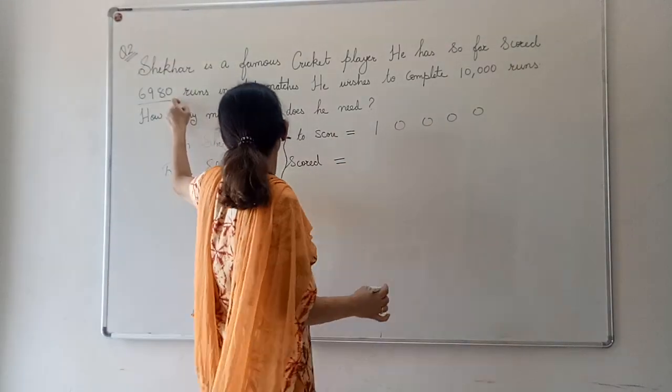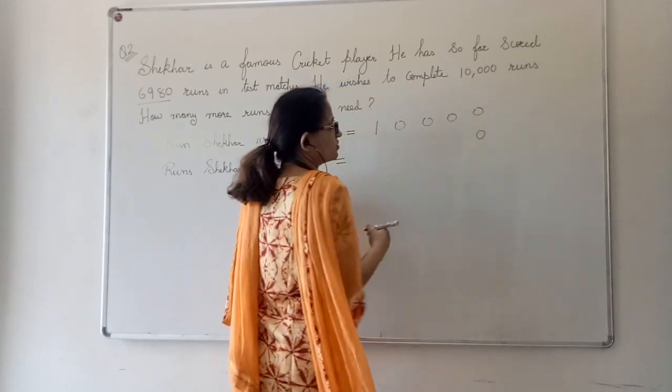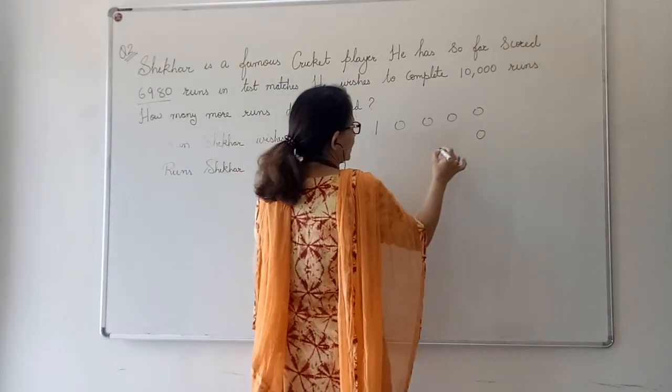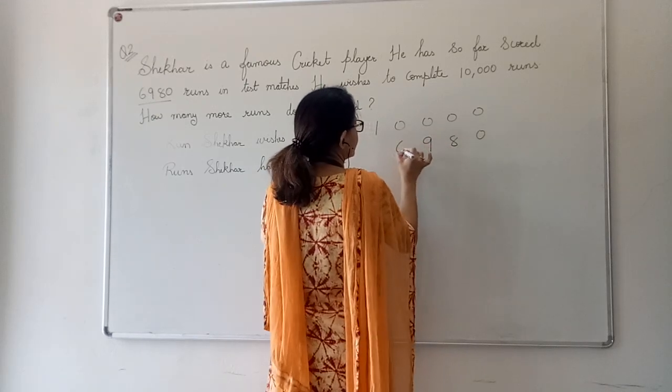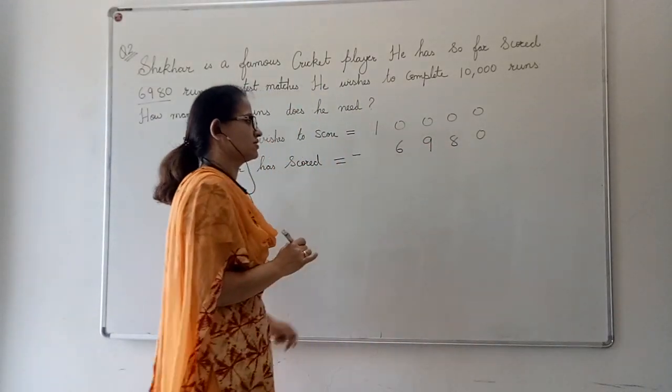So, we will start writing. In the 1's place there is 0, so 0 under 0, then 8, then 9, and then 6. We are subtracting.